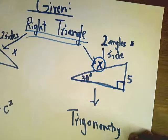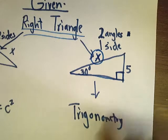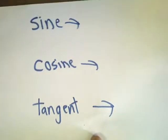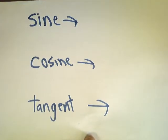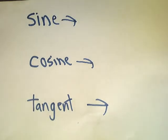This is the missing side we're looking for. In order to find it, we're going to use trigonometry. We're going to use three trigonometric functions: sine, cosine, and tangent.